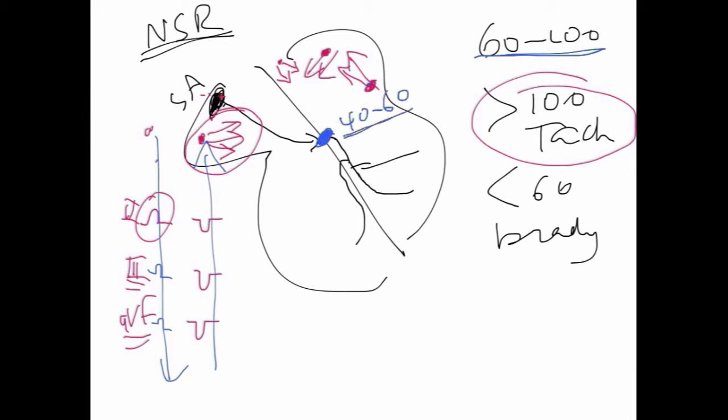So if somebody has the SA node not working, and the AV node takes over, the heart rate is probably going to be between 40 to 60. And this person is not going to have a P wave, it's just going to be junctional.